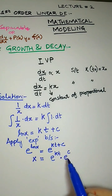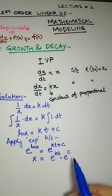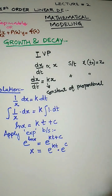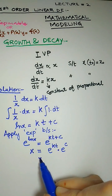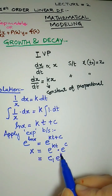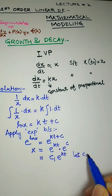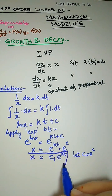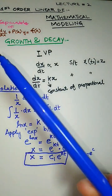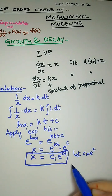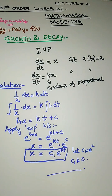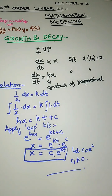Since e^c is a constant and c is a constant, we let c₁ equal e^c, combining them into one constant. So the final solution is x = c₁ e^(kt), where c₁ is not equal to zero. This is the solution for the first order linear growth or decay model. In the next video we will do an example of radioactive decay.